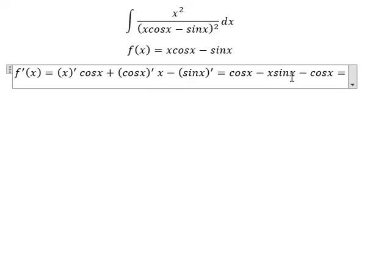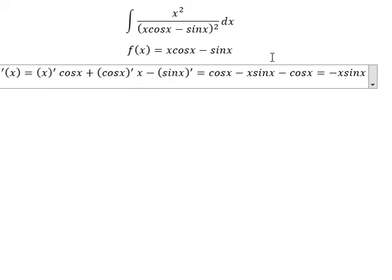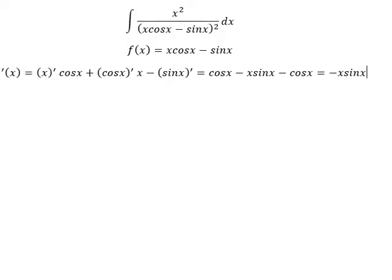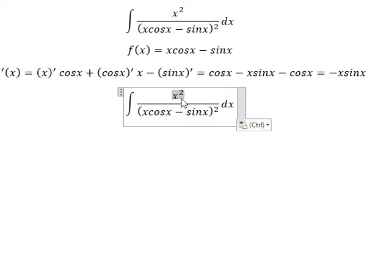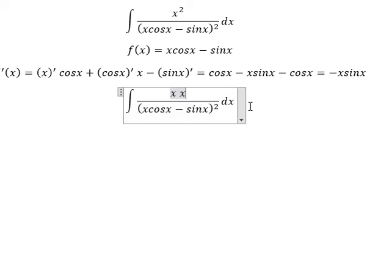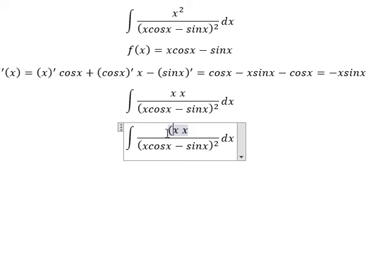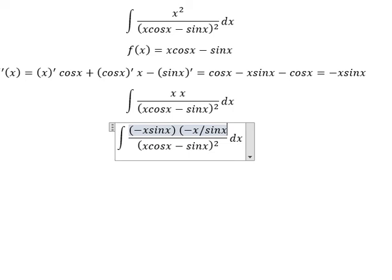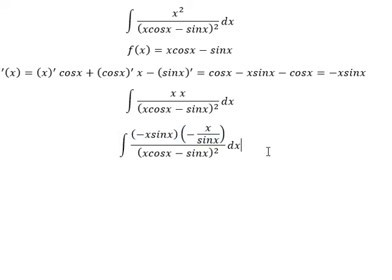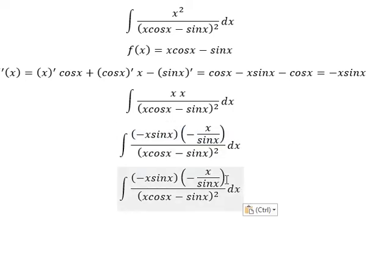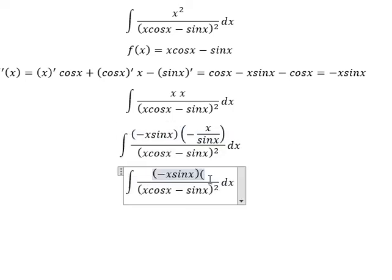If we simplify, we have negative x·sin(x). Now for this term we can write x as x times 1. So we want to have negative sin(x), which means we need to divide by 1 over sin(x). So this one we can write as negative x·csc(x).